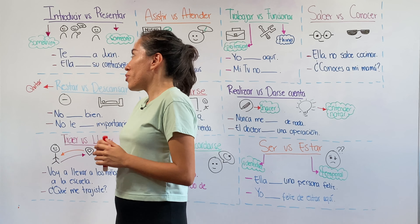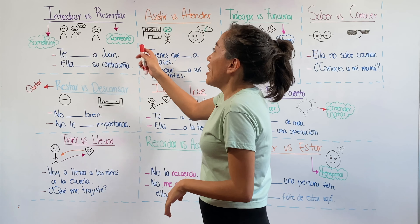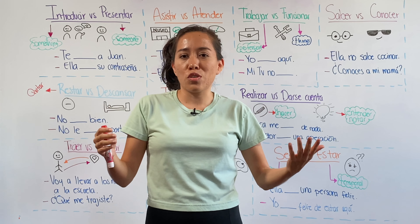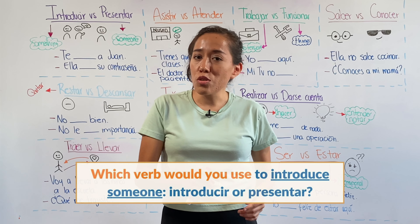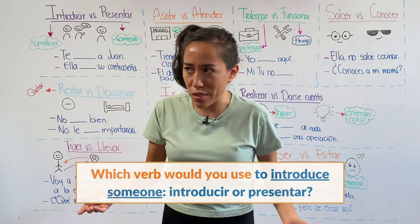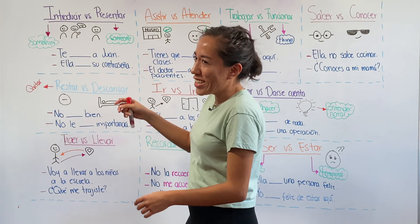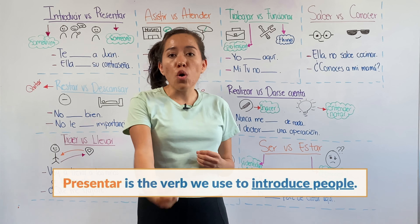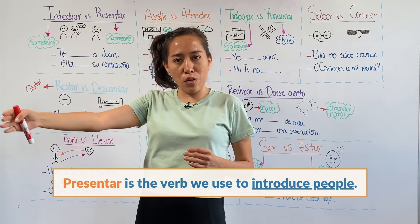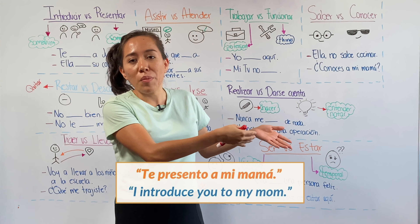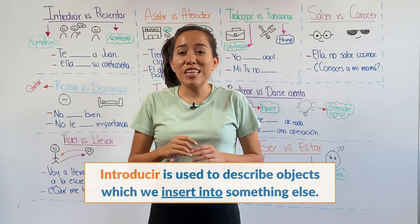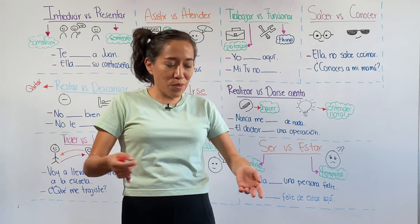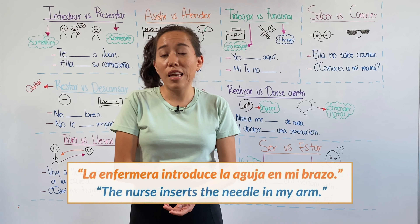What are these famous pairs of verbs? Let's start with an easy pair so we can warm up: introducir versus presentar. Imagine that you're in a trivia and about to win millions of dollars, and the question is: what Spanish verb would you use to introduce someone? In Spanish, we use presentar when we're introducing a person to another — for example, te presento a mi mamá. On the other hand, introducir is used to talk about objects that we're putting inside something else — for example, la enfermera introduce la aguja en mi brazo.